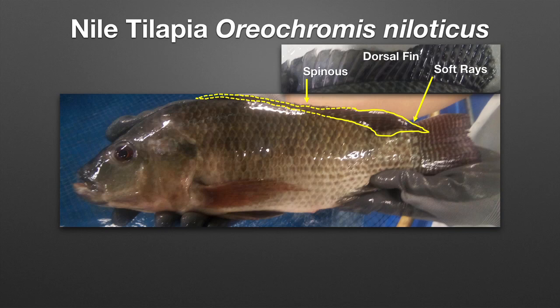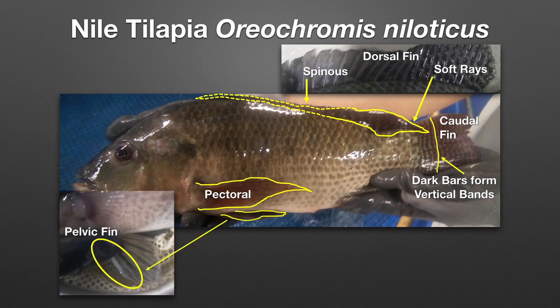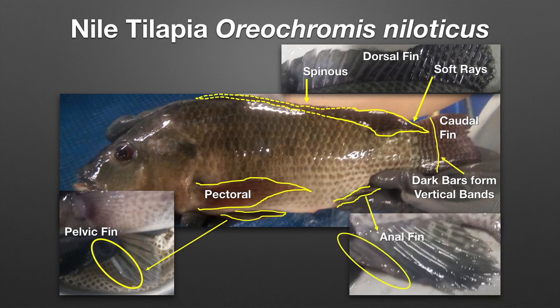Let's look more closely at the external anatomy of Nile tilapia. The dorsal fin is divided into the spinous part at the anterior portion and the soft rays at the posterior portion. One special feature of Nile tilapia is the banding pattern on the caudal fin — dark bars form vertical bands distinguishing it from other tilapia species. There is also a hard spine on the pelvic fin and on the anal fin, so when handling tilapia you want to be careful of these spines.